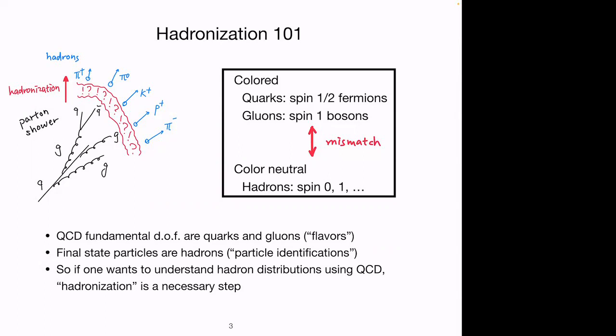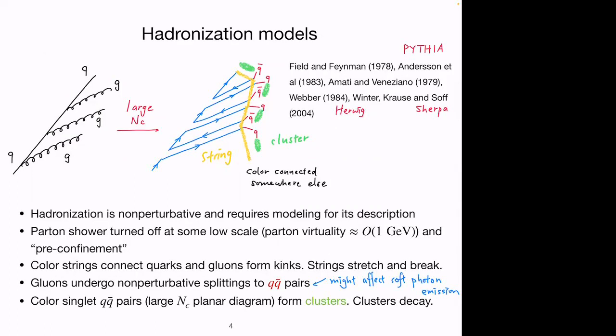Quarks and gluons are elementary particles — fermions and bosons with spin 1/2 and 1 — and they are colored. In the end, you have to color-neutralize the whole thing and combine these fundamental degrees of freedom to get hadrons, which can have many excited states. This must be extremely complicated and non-calculable. But there are certain non-perturbative features that are less sensitive to hadron mass or more detailed properties, yet still non-perturbative and very interesting to study.